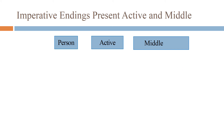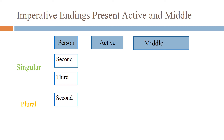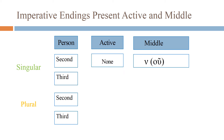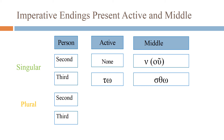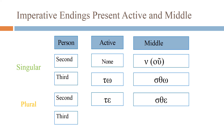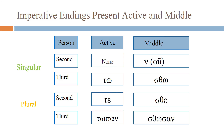Imperative endings — present active and middle: the endings exist in the singular (second and third person) and plural. In the active: second singular has no ending; the middle is -ou (merging to omicron-upsilon). Third singular active is -tō; middle is -sthō. Second plural active is -te (same as the indicative); middle is -sthe (same as the indicative). Third plural active is -tōsan; middle is -sthōsan.